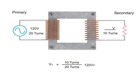Rearranging the formula and then dividing 10 turns by 20 turns, we get 0.5 multiplied by 120V. This results in a calculated step down voltage of 60 volts.